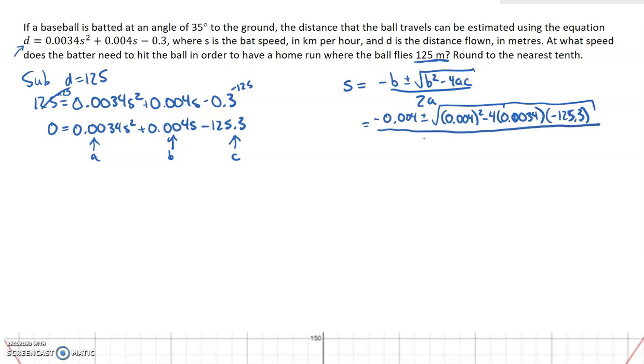Then we stretch that square root to be over all the numbers underneath it. And then we're going to divide that by 2 times 0.0034, the a value. Now, notice here, because I have a negative there and a negative there, that it's going to be positive under the square root. Don't miss the fact that I'm going to add those three numbers that multiply together.